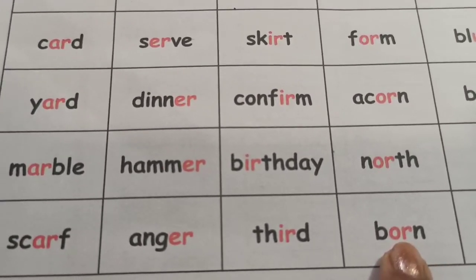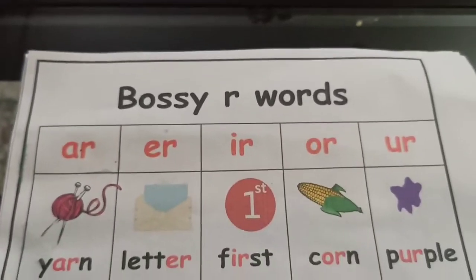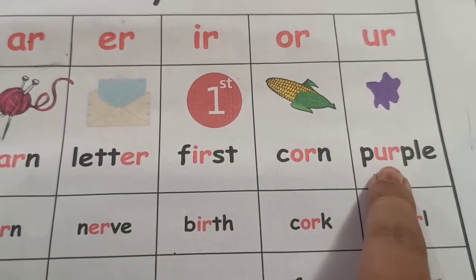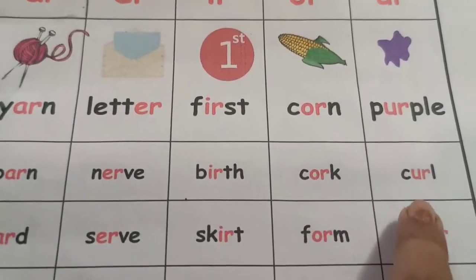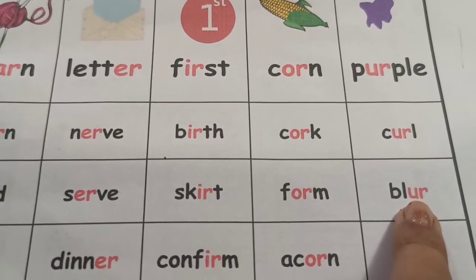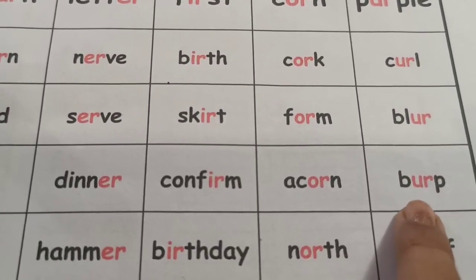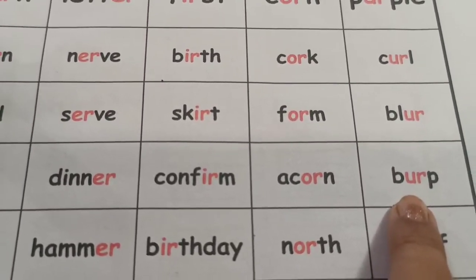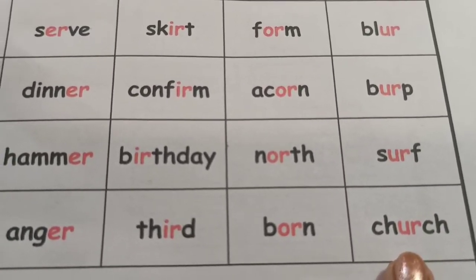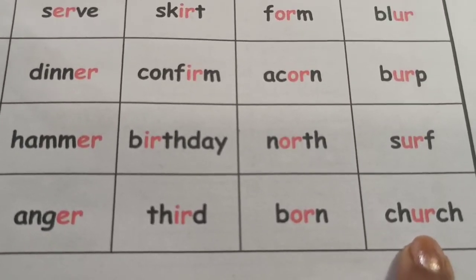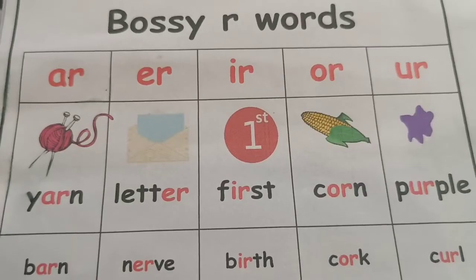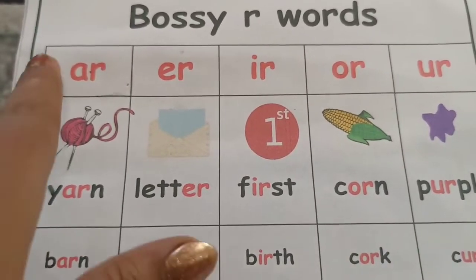Now let us see the last sound, U-R, which also gives the 'er' sound. Some words: purple, curl, blur, burp, surf, church. So these are all the R sounds.